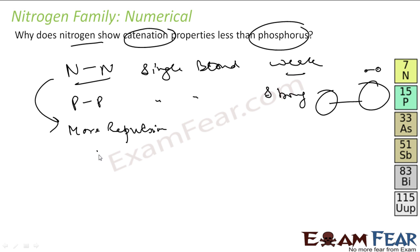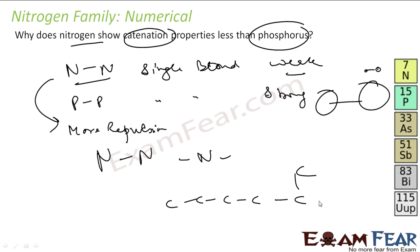Catenation refers to the ability to form chains — carbon, for example, forms long chains. This is called catenation.